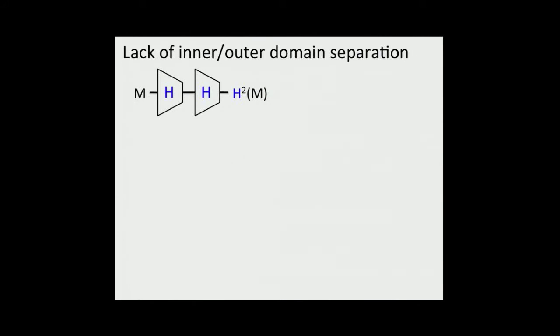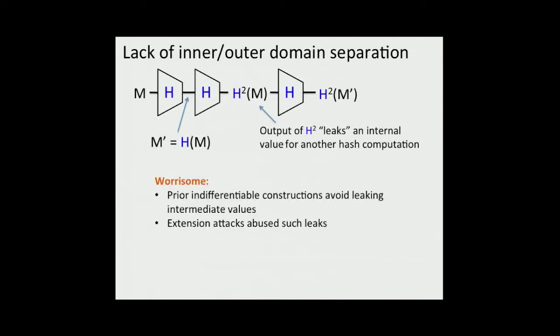This construction has the property that any output of the construction is an intermediate value used in the computation of another message in the domain. In particular, if we let M prime equal H of M, then we note that H squared of M is the intermediate value used to compute H squared of M prime. This sounds like a very basic observation, but it's disconcerting to someone who's done a lot of work on indifferentiability. Prior constructions particularly seek to avoid such phenomenon because similar types of intermediate value leakage have resulted in extension attacks, which are exactly what these types of constructions were trying to prevent. It's not clear exactly what an attacker can do with this property.